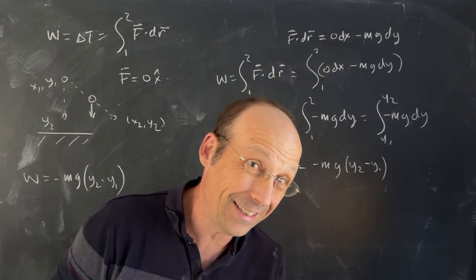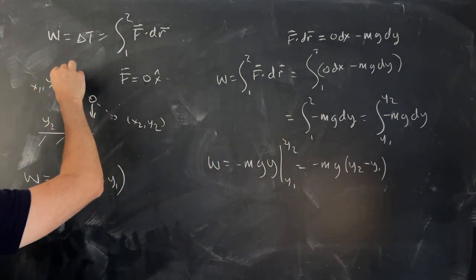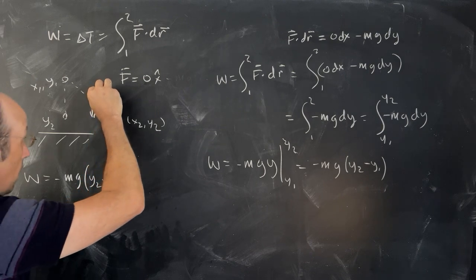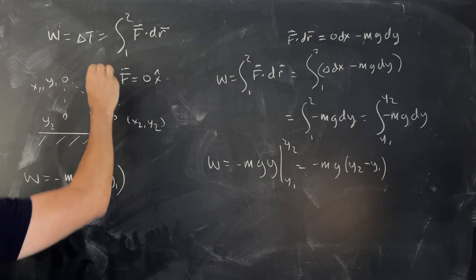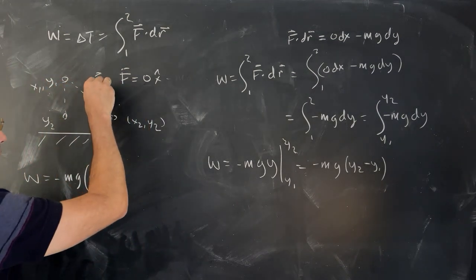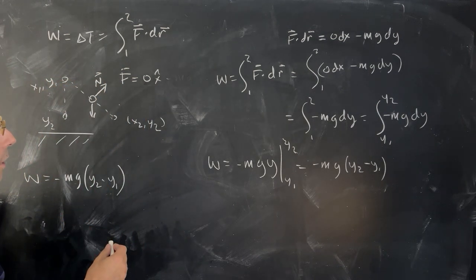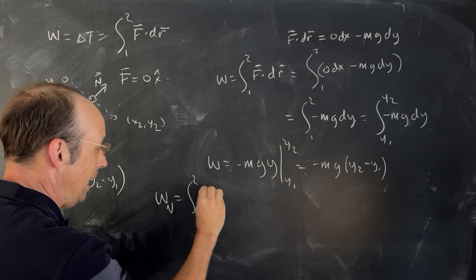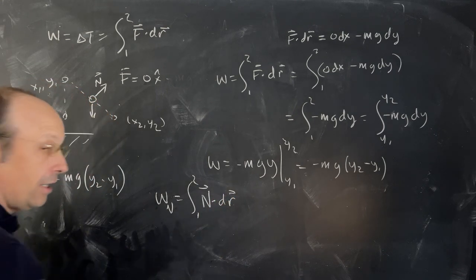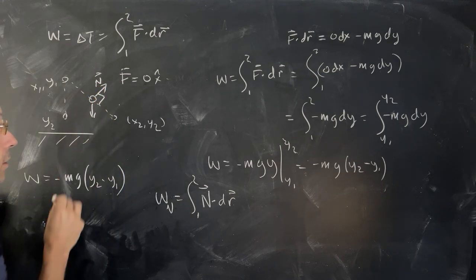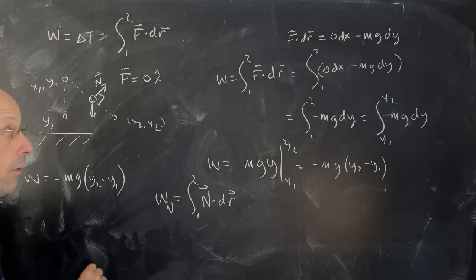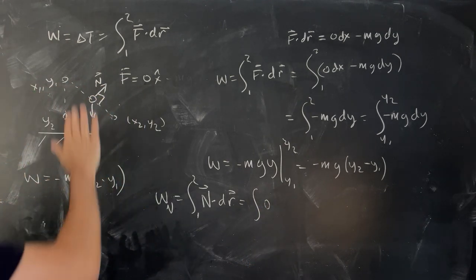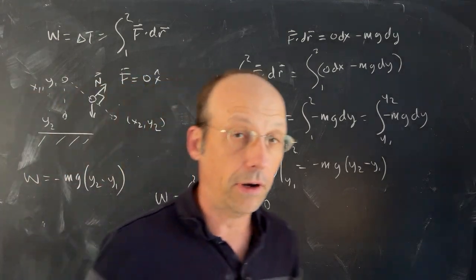Now, how does the object move along that path if there's a downward gravitational force? It wouldn't move in a straight line on its own - there has to be some other force acting on it: the normal force. But let's calculate the work done by the normal force. Work_N is the integral from 1 to 2 of N·dr. The angle between N and dr is 90 degrees, so the dot product is 0. So the work done by the normal force is 0, and I didn't have to include it.